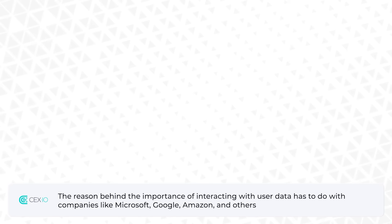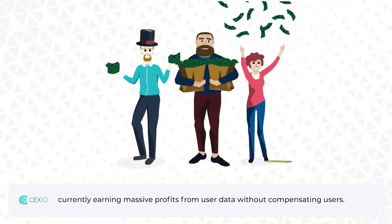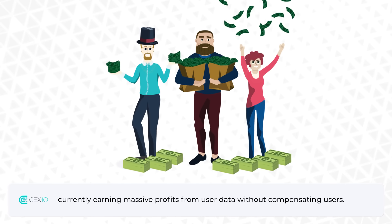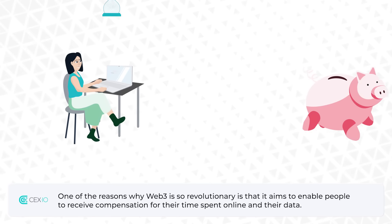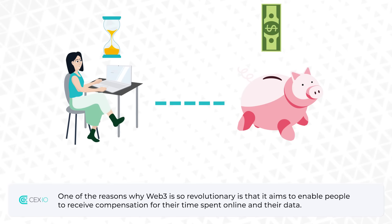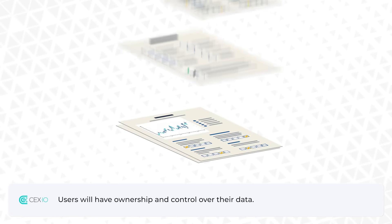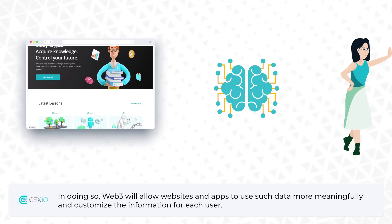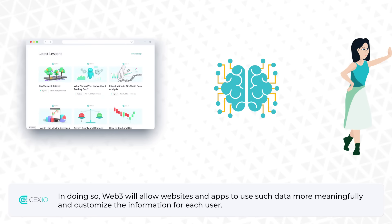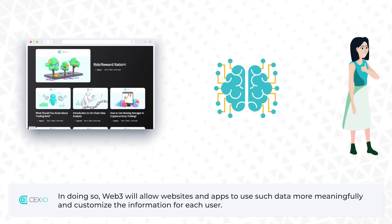The reason behind the importance of interacting with user data has to do with companies like Microsoft, Google, Amazon and others currently earning massive profits from user data without compensating users. One of the reasons why Web 3.0 is so revolutionary is that it aims to enable people to receive compensation for their time spent online and their data. Users will have ownership and control over their data. In doing so, Web 3.0 will allow websites and apps to use such data more meaningfully and customize the information for each user.